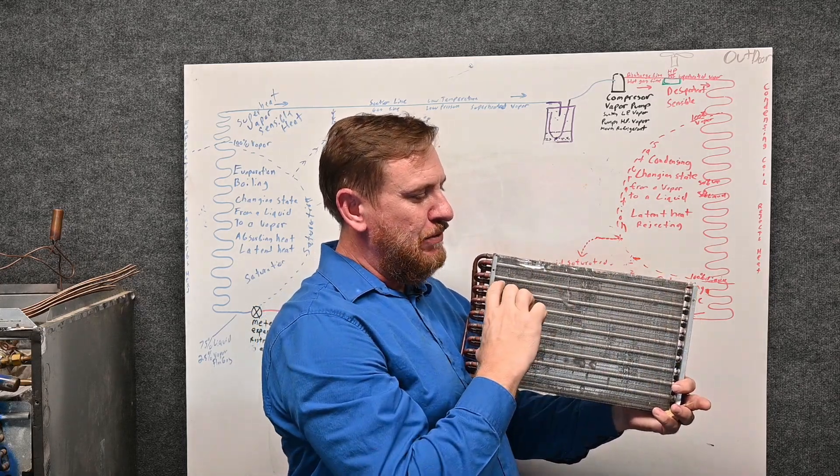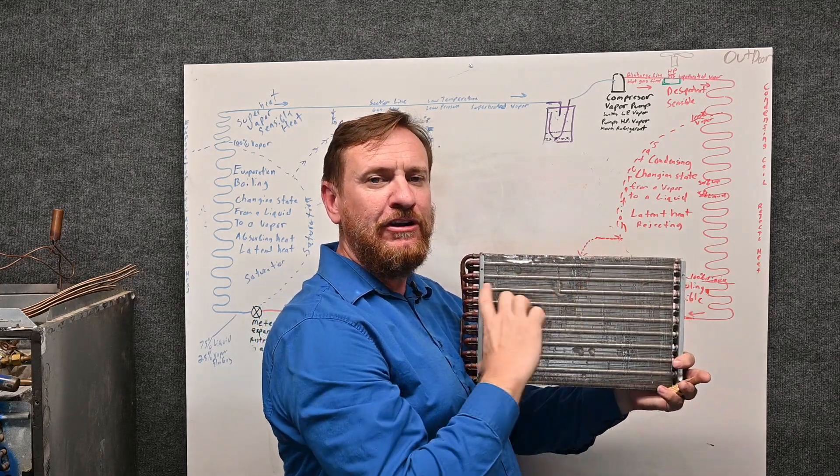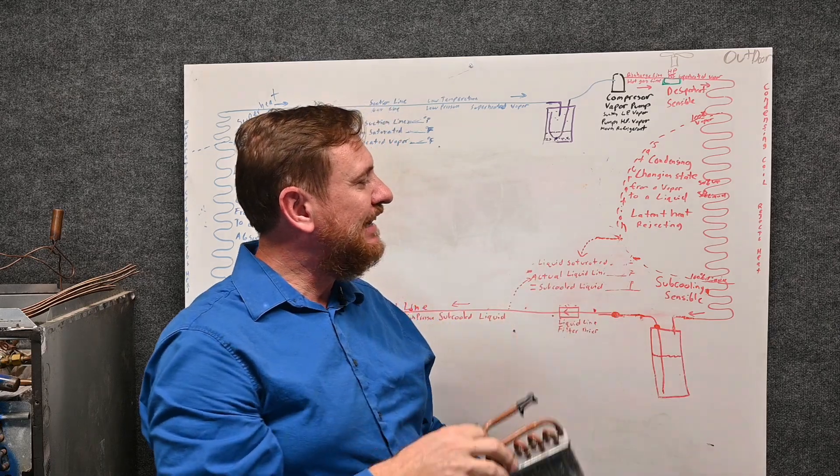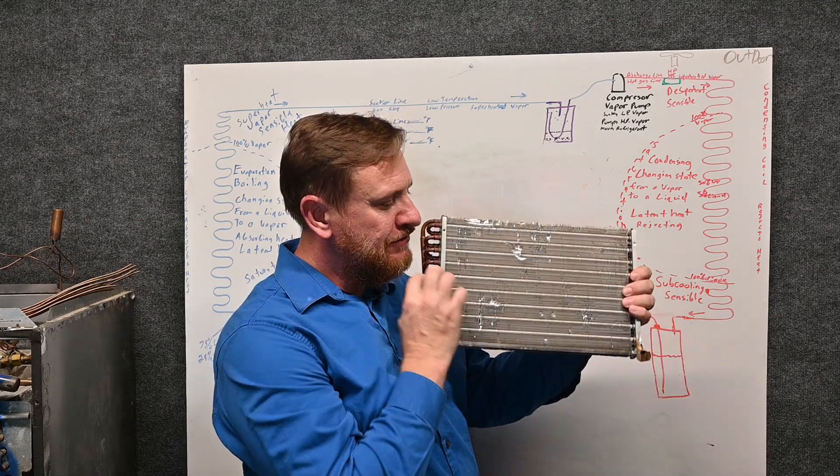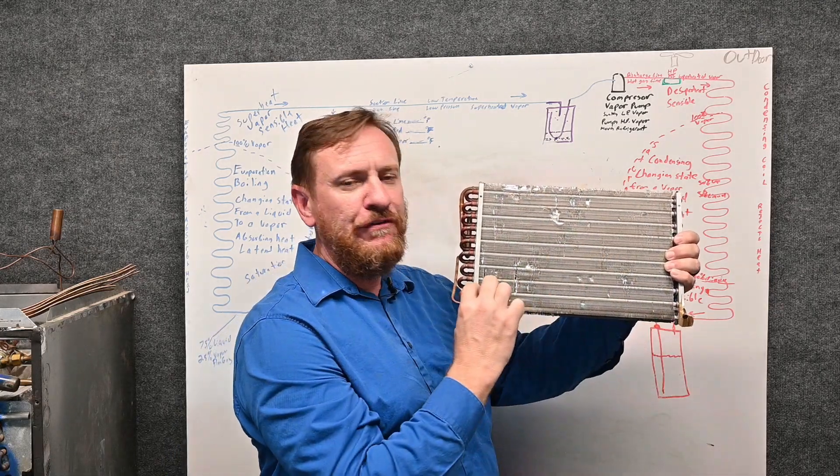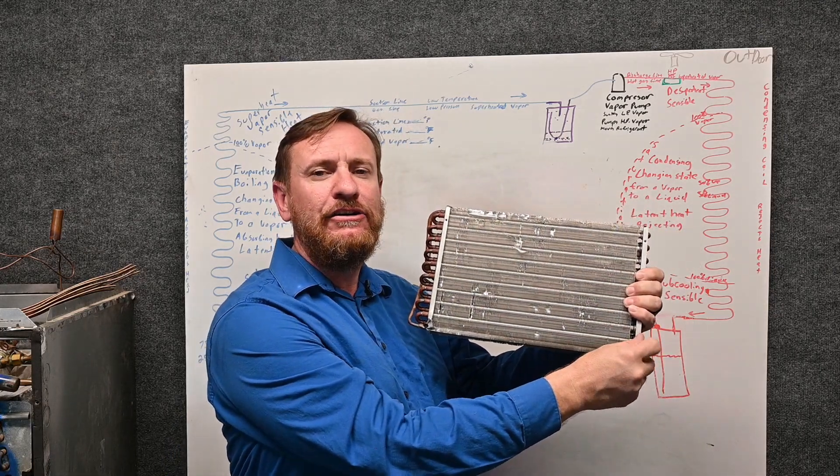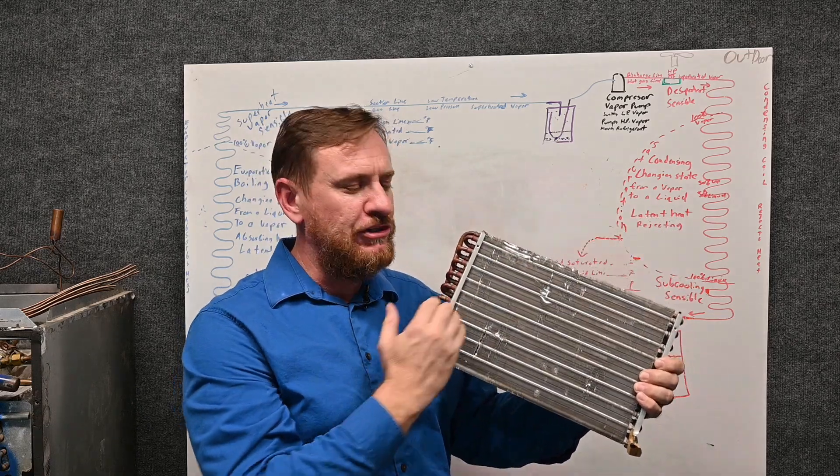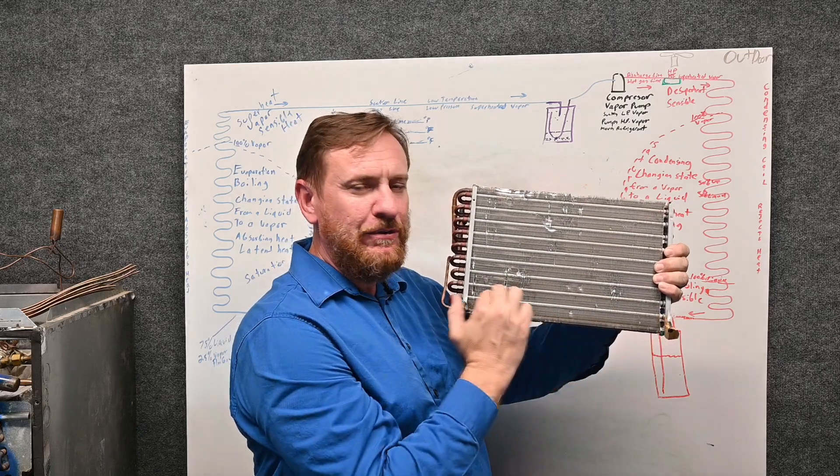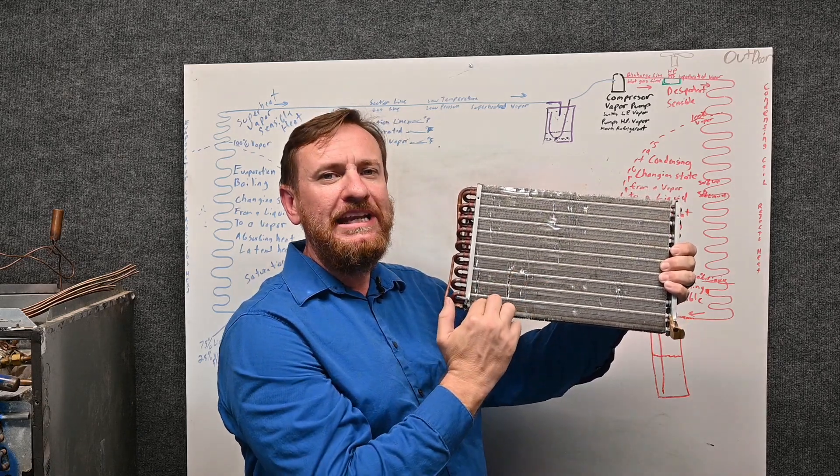We de-superheat it, we condense it—change it from a vapor to a liquid—and then the very last thing we do is we subcool that liquid. We can measure this now with the thermometer. So the last little bottom row of this condenser, approximately, is our subcooling, and it's taking it below a saturated temperature. Here it's 100% liquid, and then we subcool it even more. We take even more sensible heat, and you can measure that.